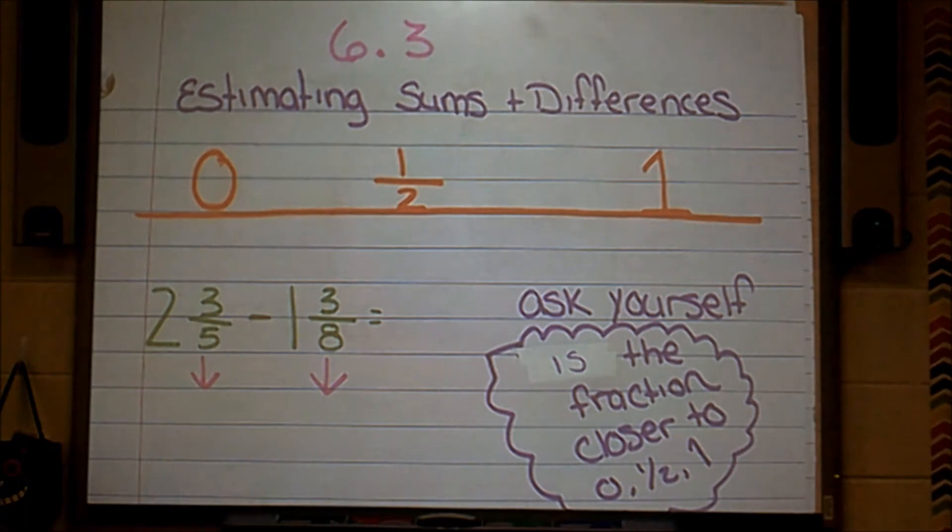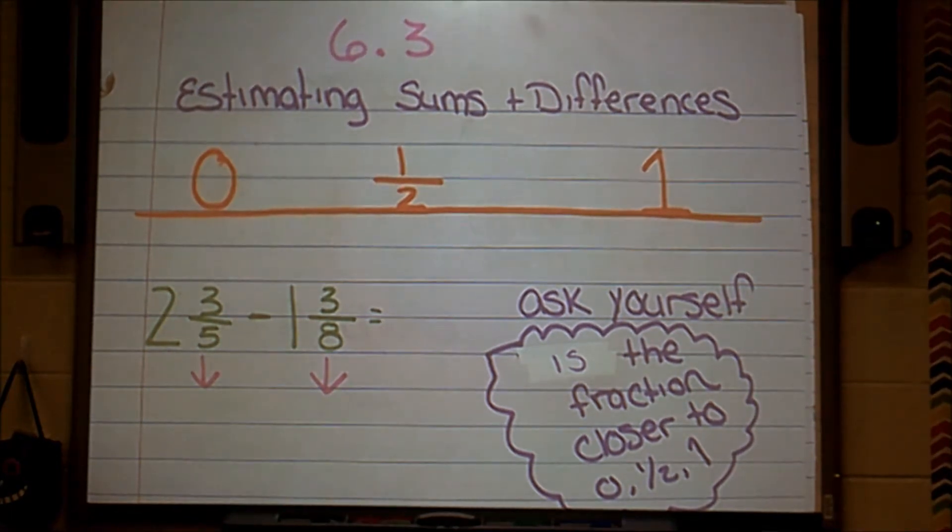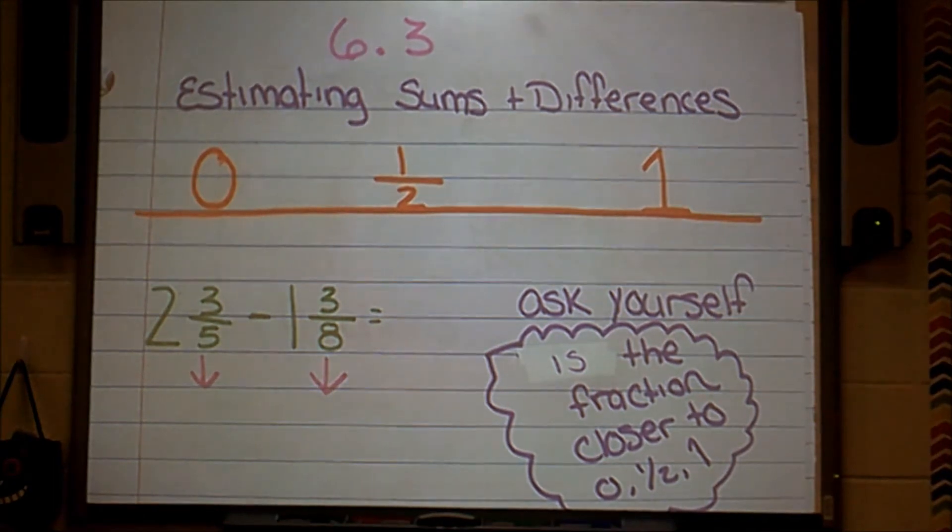So if that kind of didn't make a lot of sense, it will by the end of this, I promise. Look at the problem that you see there. 2 and 3 fifths minus 1 and 3 eighths.